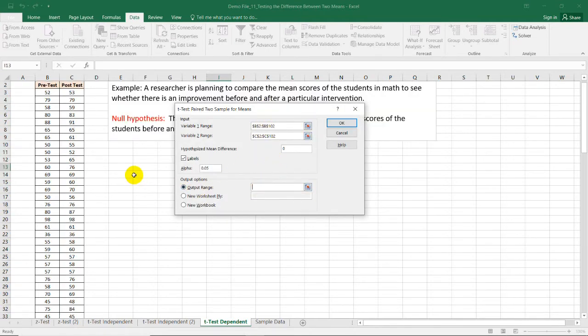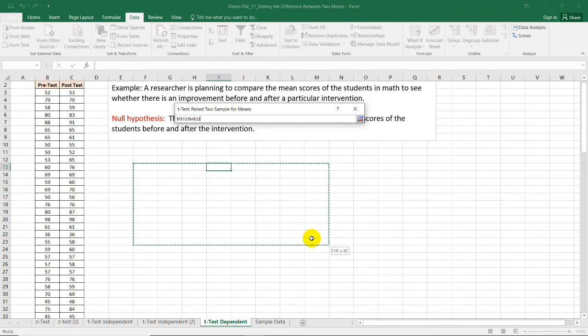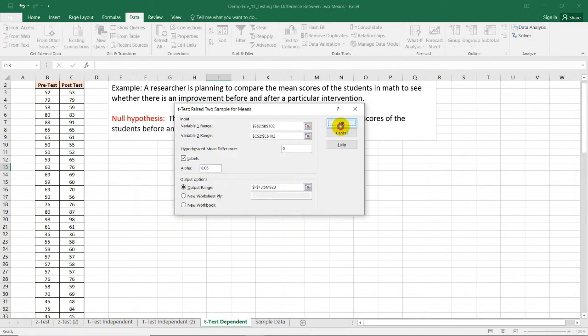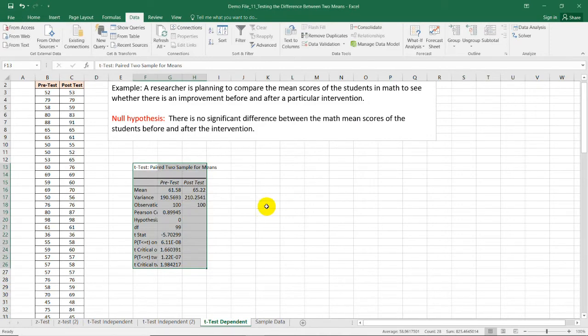Let me select the output range on this same sheet. Selecting this, I need to select a range of cells. Then pressing OK will give us this summary table.